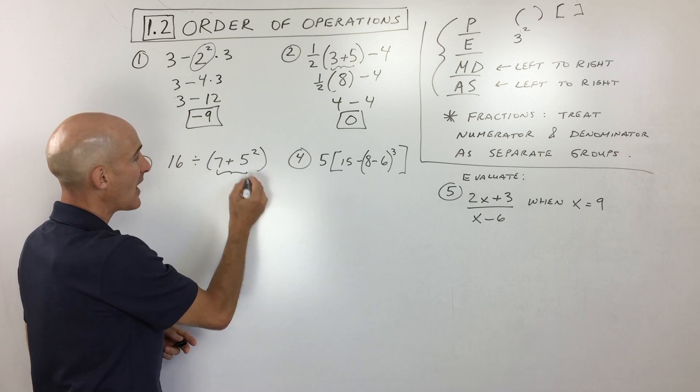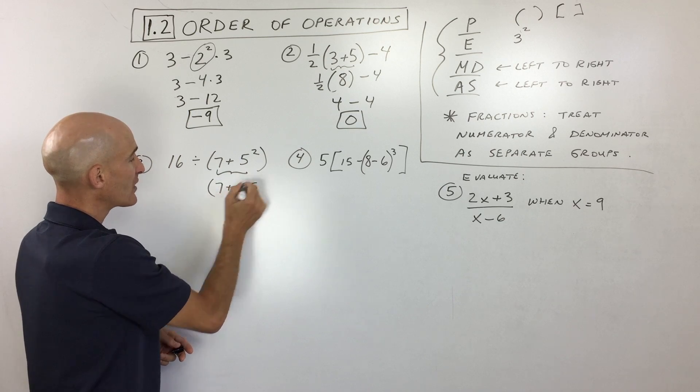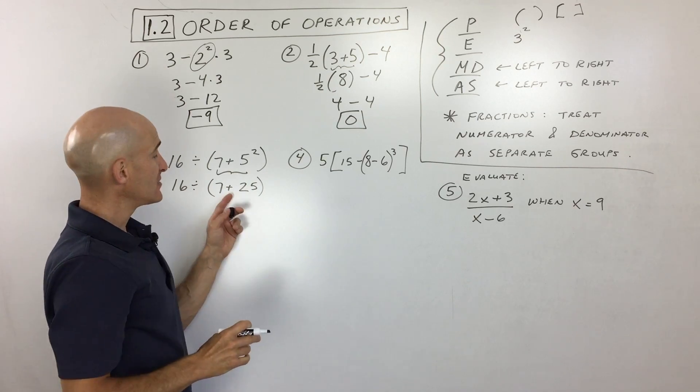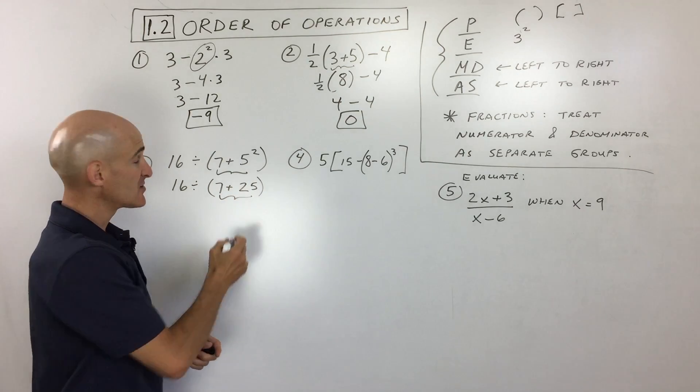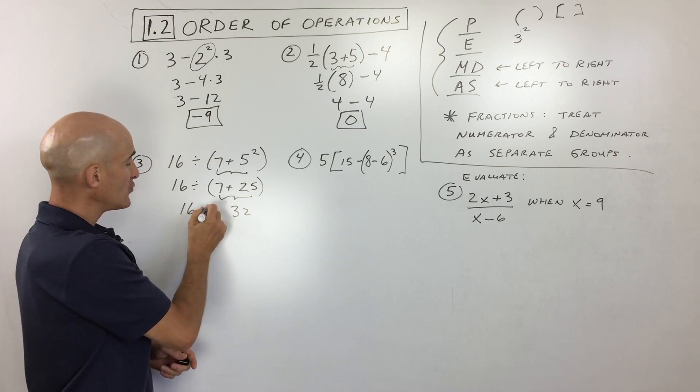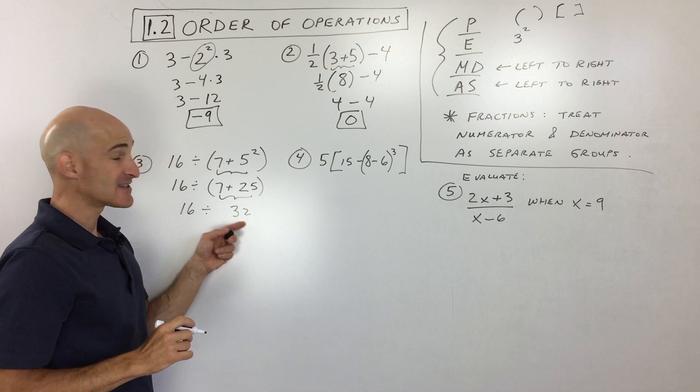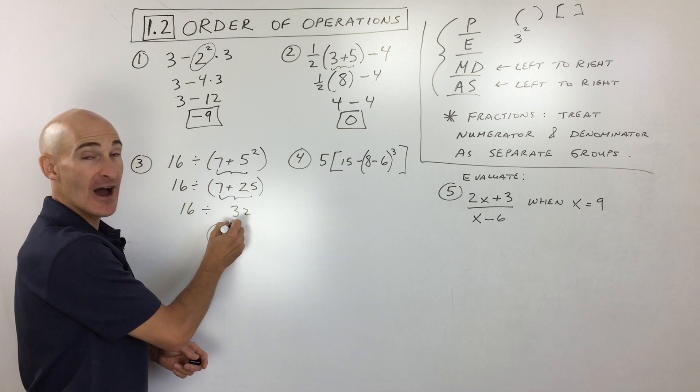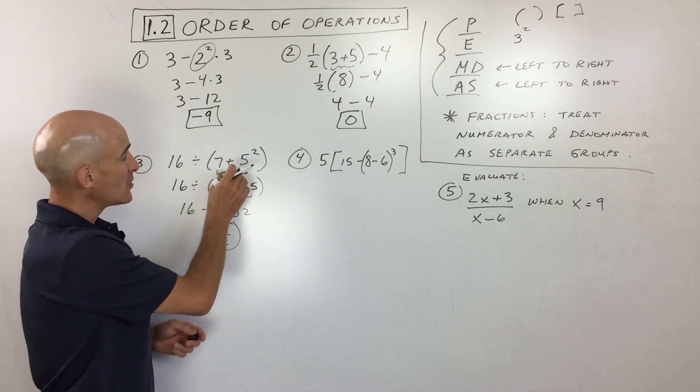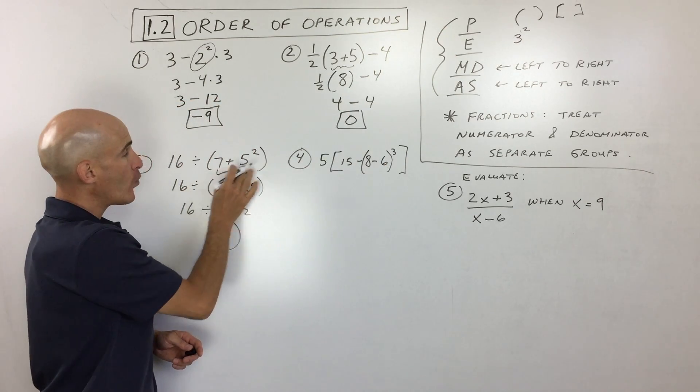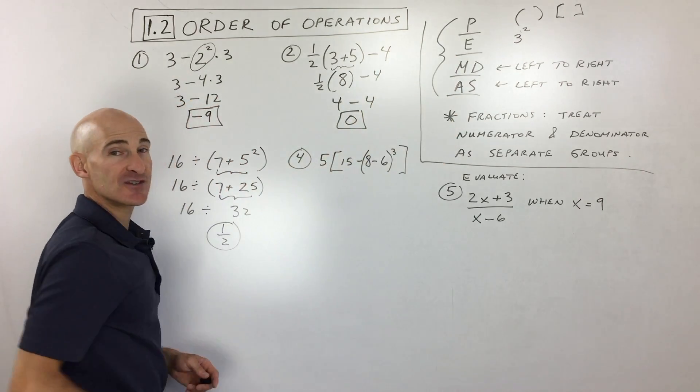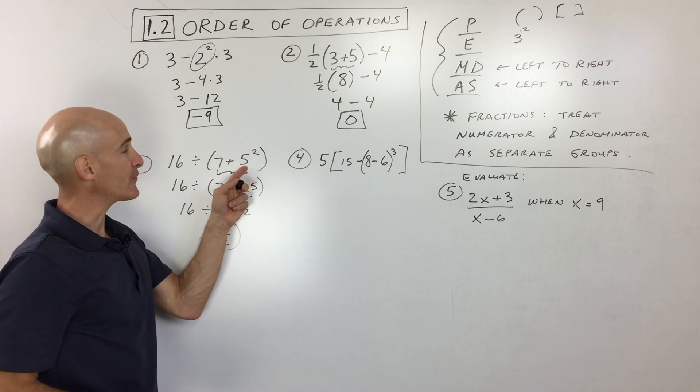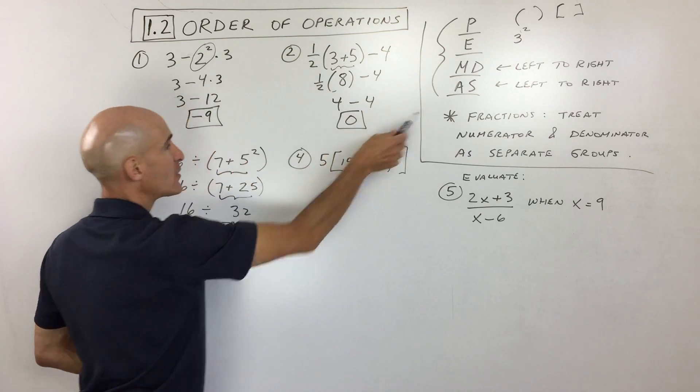5² means 5·5, five twice, that's 25. I'm bringing everything else down. We're still inside the parentheses. 7+25=32. Bring down the 16 and the division sign. 16÷32 equals ½, or 0.5 as a decimal. Notice we started with the parentheses, but within the parentheses we still follow PEMDAS. That's why I did 5² first, not 7+5. You do the exponents first because that's more important, then work your way down.